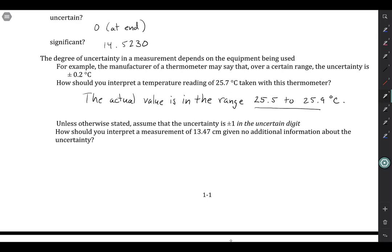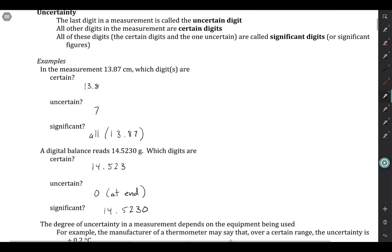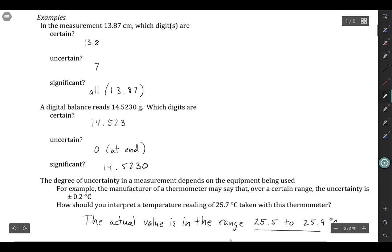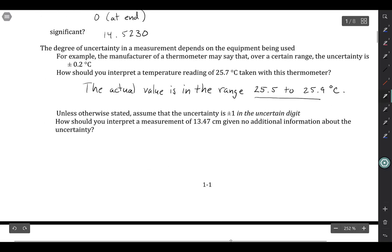Now, in general, if you're not told otherwise, just always assume that the uncertainty is plus or minus 1 of whatever the uncertain digit is. For example, in the case of this measurement here with the ruler, 13.87, it would be plus or minus 1 in the hundredths place. So plus or minus 1 hundredth. Using the digital balance, unless we saw other instructions, we would assume it's plus or minus 1 ten-thousandth of a gram. So we've mentioned that if we had 13.47 centimeters, no additional information means that the value is somewhere in the range between 13.46 to 13.48. That would be our assumption.